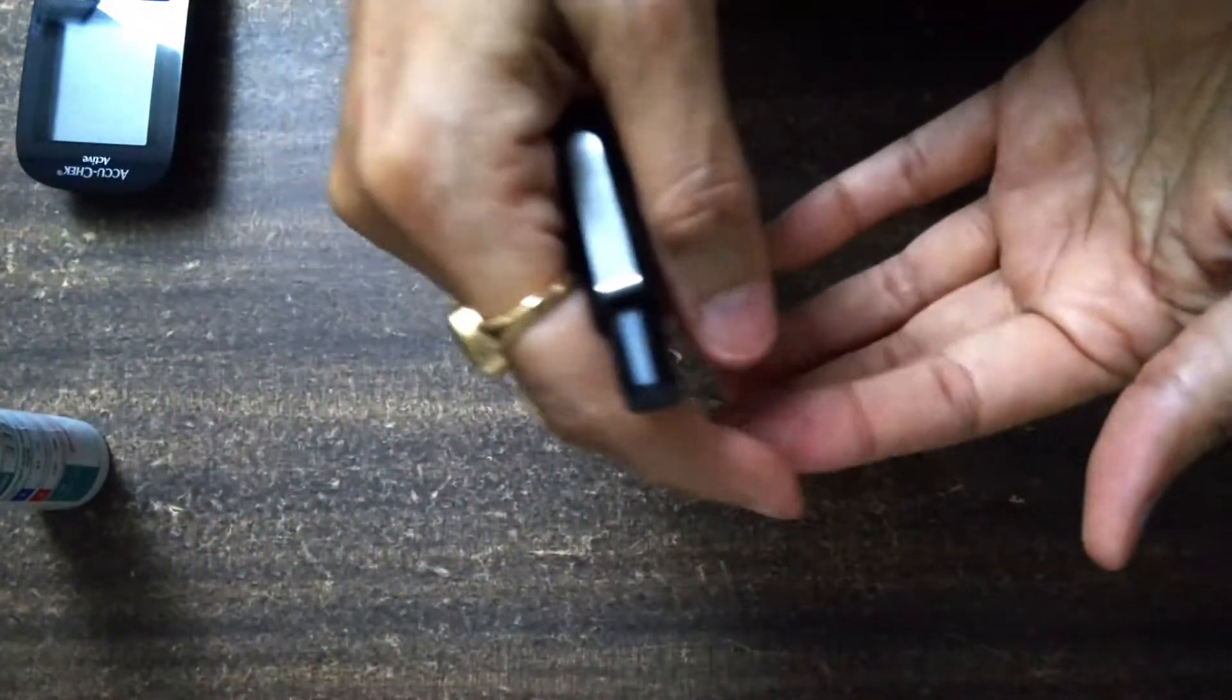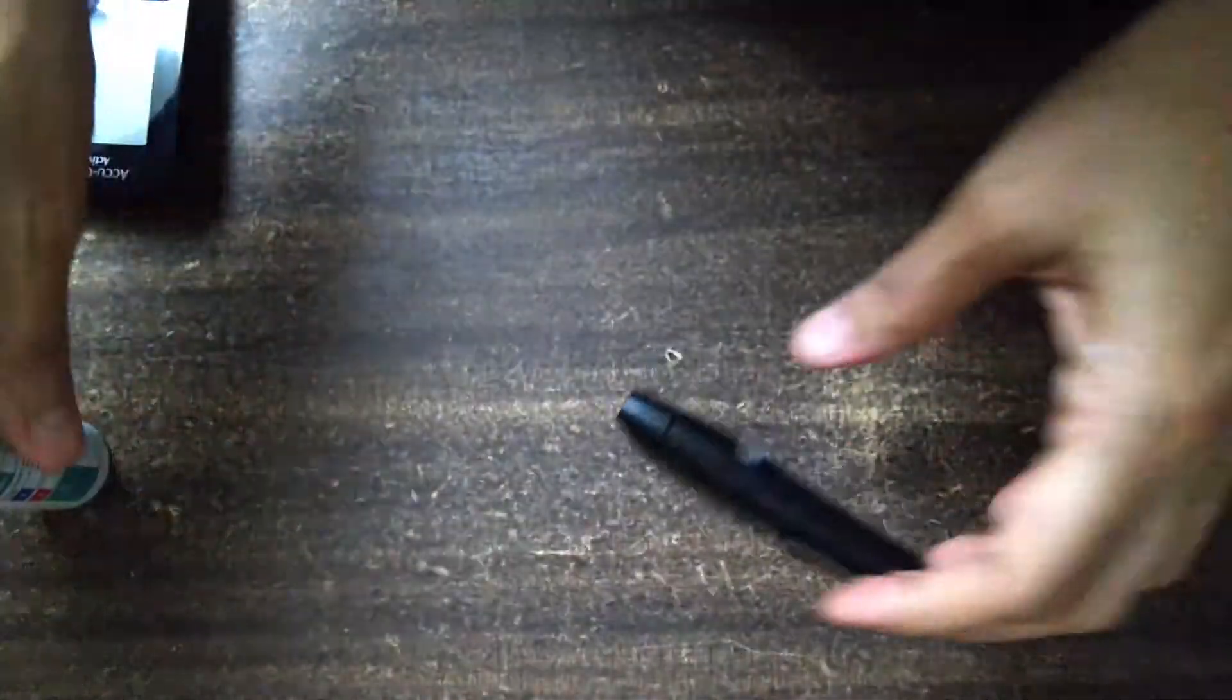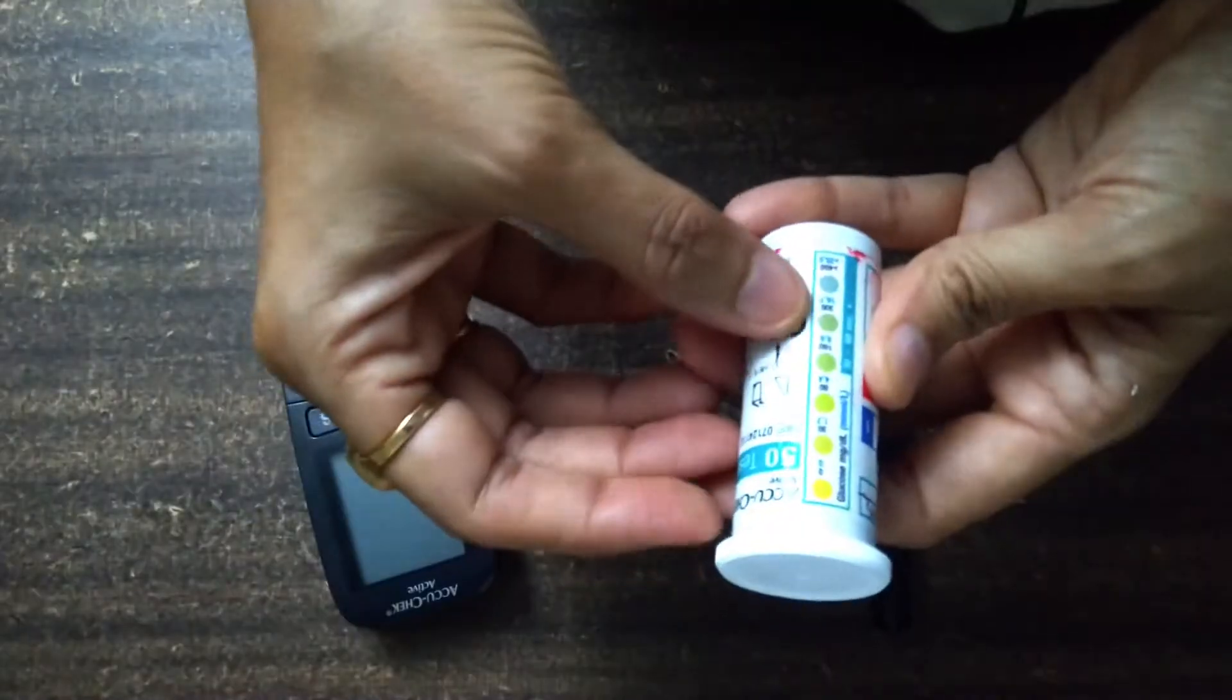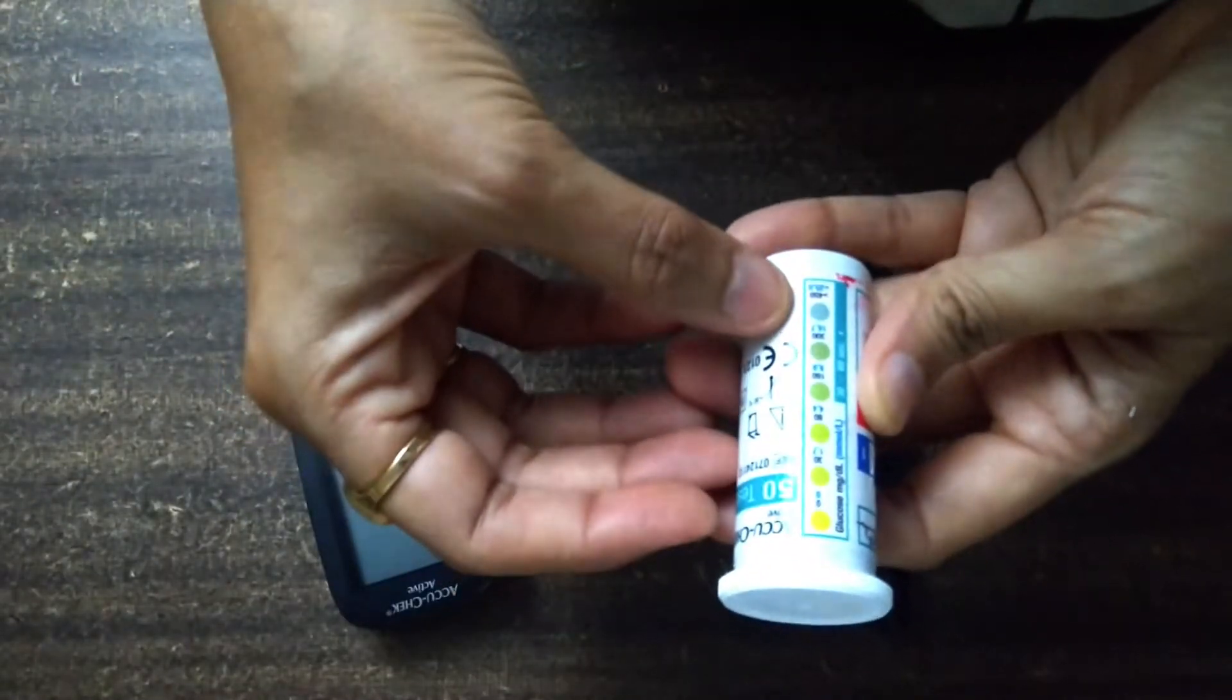Now we will use 3 numbers. Now we will use this portion. You will also use the strip.